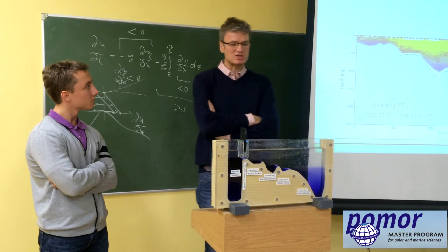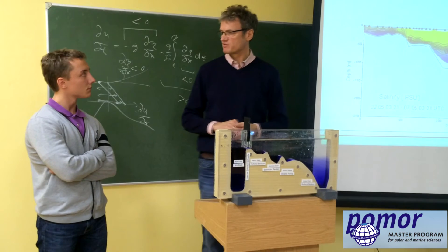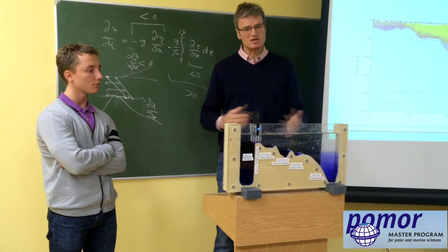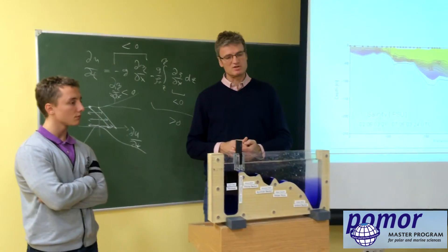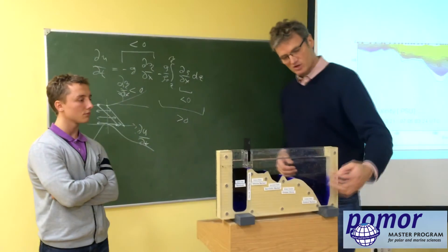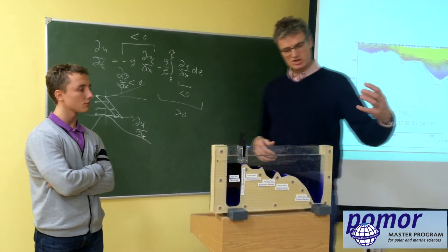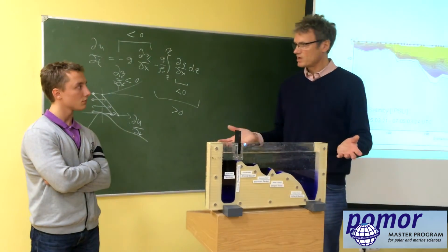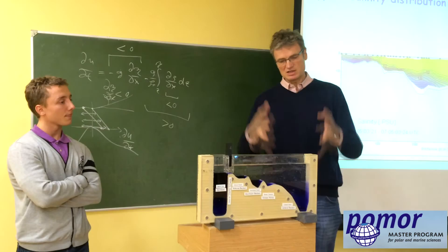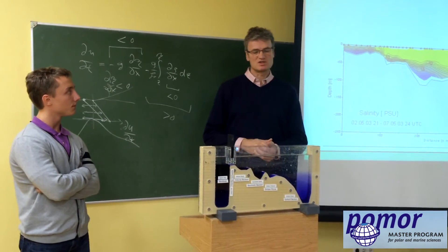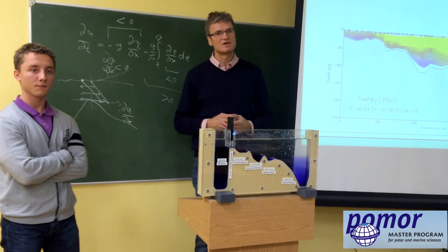The oxygen deficiency problem in the central Baltic Sea is partially man-made. It is natural to have primary production in the surface layer, but due to agriculture and industry we are putting a huge amount of nutrients into the Baltic Sea, making production much higher than natural. Therefore the sinking of organic material and the resulting oxygen depletion are much higher than natural. One way to improve the situation is to reduce nutrient input, but even if we stopped nutrient supply today, it would still take around 30 to 40 years to return to more natural conditions.